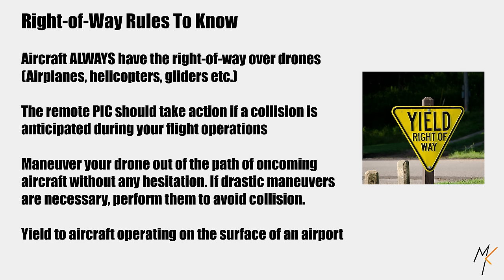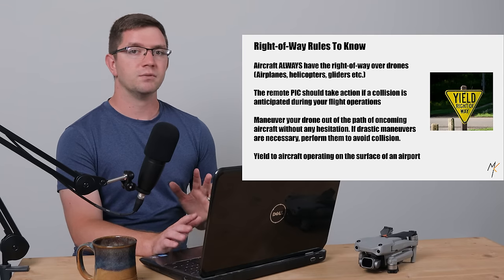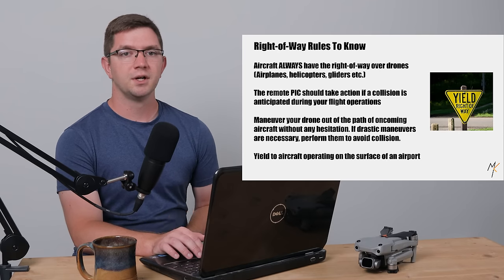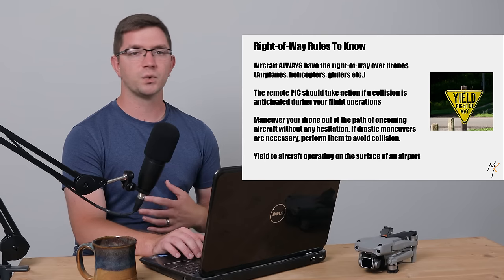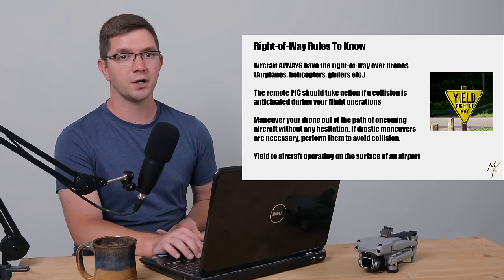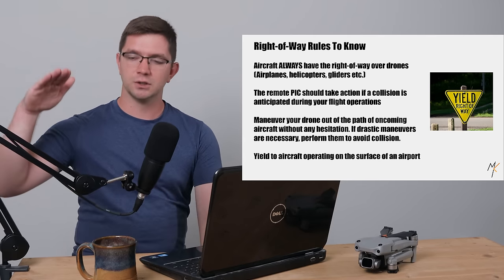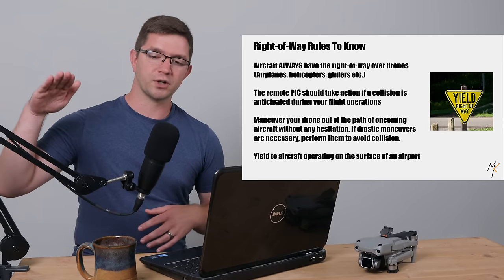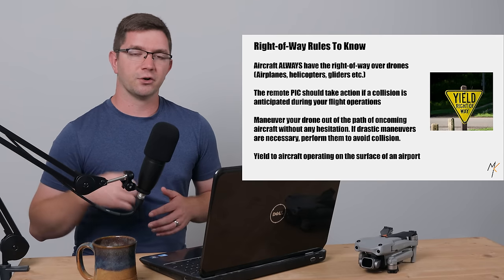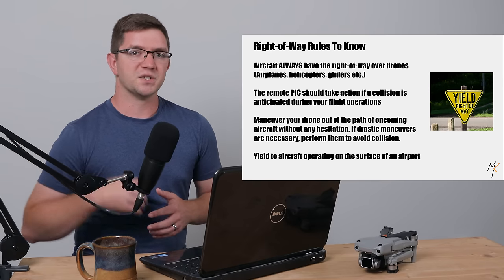Let's talk about right of way when flying. Simply put, aircraft always have the right of way over drones — this includes airplanes, helicopters, and gliders. If you see an aircraft approaching where you're conducting your flight, you have to give way to that oncoming traffic. The best way to avoid oncoming aircraft is to descend to a much lower altitude. If you have trees nearby, I like to simply drop below the tree line until the aircraft are out of the way, then resume my flight as needed.